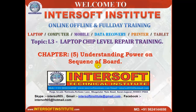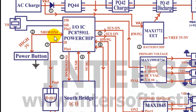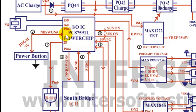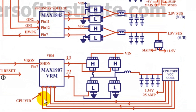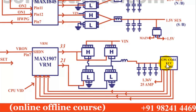Understanding the power-on sequence of laptop motherboards: when the user presses the power button, the NBS1 high signal (3V or 2.5V) at the power button becomes low. The I/O IC, EC, or power IC detects this transition. Then VID signals from the CPU feed back to the VRM IC, which determines how much power to supply to the CPU core and generates it accordingly.